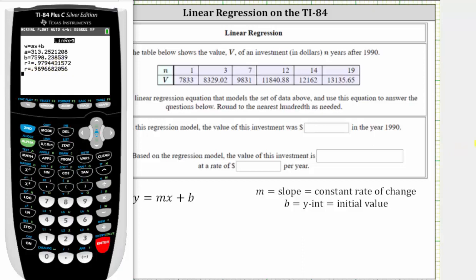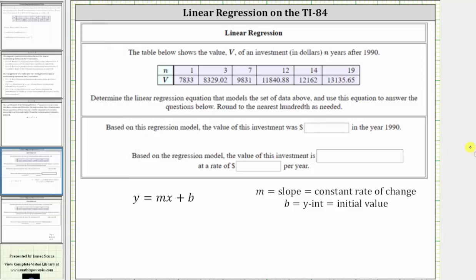Which means our regression equation in terms of n and v is v equals 313.25n plus 7,598.24.